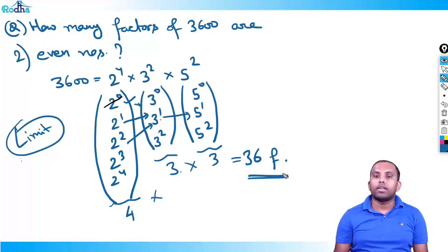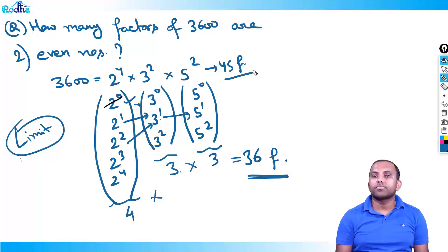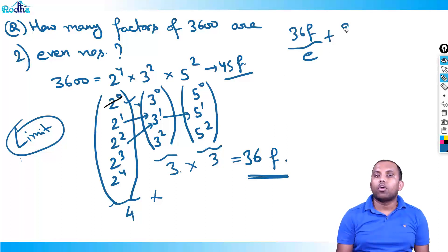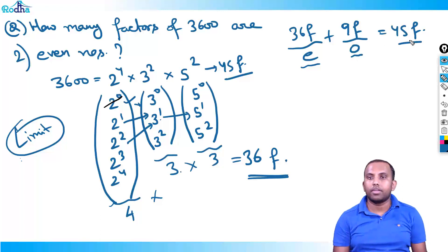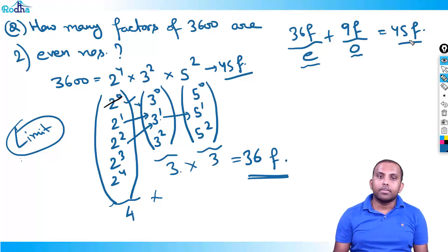So 3600 has 36 even factors. Check: 36 even + 9 odd = 45 total factors. Even plus odd factors should always equal the total number of factors.